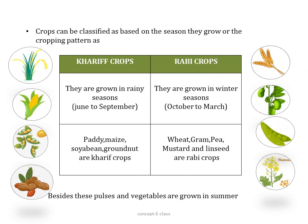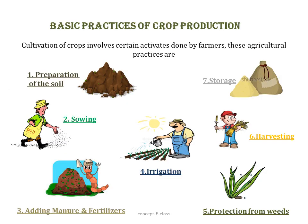Crops can be classified based on the season into two types: Kharif crops and Rabi crops. Kharif crops are the crops that are grown in the rainy season, that is from the month of June to September. Rabi crops are the crops grown in winter season, that is from October to March. Examples of Kharif crops are paddy, which is rice, maize, soybean, and groundnut. Examples of Rabi crops are wheat, gram, peas, and mustard. Pulses — which are lentils like toor dal — and vegetables are usually grown in summer.